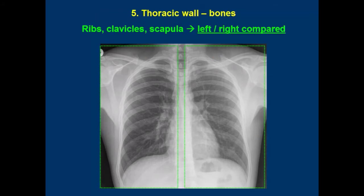5. Thoracic skeleton. Look mainly at the ribs, clavicles and scapulas, always left and right compared. You can take a moment to count the ribs to check the respiratory phase or to help with lesion location reporting. This is more important in trauma and pleural effusion cases.